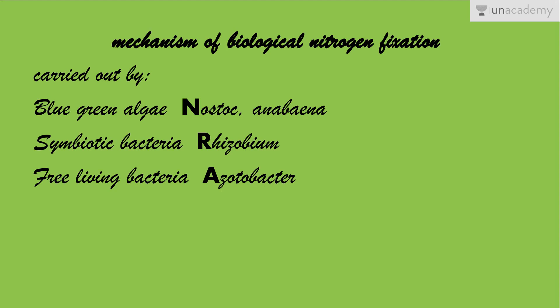In this lesson, we are going to study biological nitrogen fixation. This can be carried out by blue-green algae like Nostoc or Anabaena, or by symbiotic bacteria — meaning bacteria that form a symbiotic association with the roots of plants — such as Rhizobium. It may also be carried out by free-living bacteria like Acetobacter.